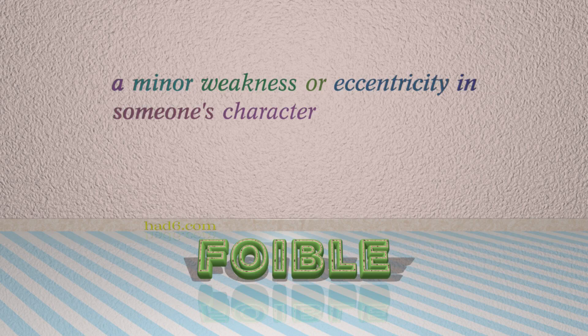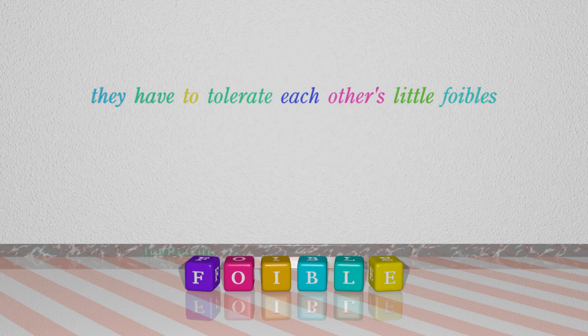Number 5: Foible. Which means a minor weakness or eccentricity in someone's character. For example: They have to tolerate each other's little foibles.